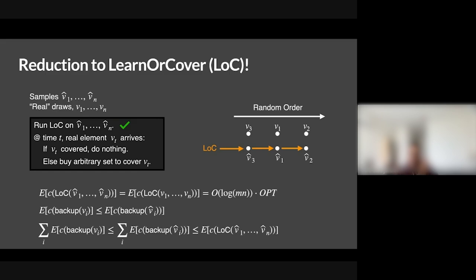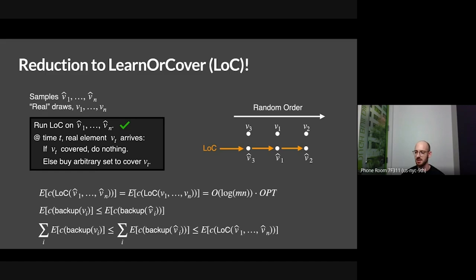Everything generalizes to the weighted setting with the best possible bounds — you lose a factor of two, just constants. In fact, this generalizes to settings where you have less than one sample per distribution: if there's some probability of erasure where a sample is just deleted, this still works.